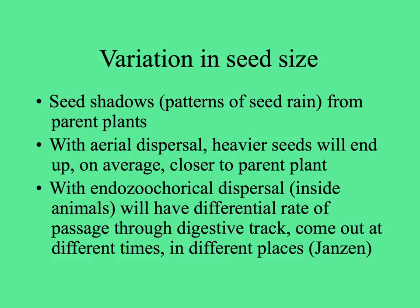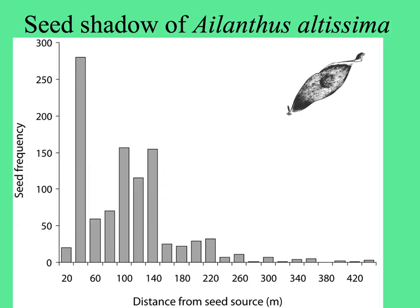With endozoochoral dispersal — inside of an animal, where the fruits or seeds are ingested and passed through — if seeds are different sizes, the smaller ones may get stuck in places in the intestine while the bigger ones go through faster, so they'll come out at different times in different places. Dan Janzen, a tropical biologist, observed this with real seeds and animals eating them, and then tested it himself by eating buttons of different sizes and examining how quickly they came out of his own body. Here's a graph showing distance from parent tree and frequency of number of seeds of Ailanthus altissima — in general, more land closer than farther away.